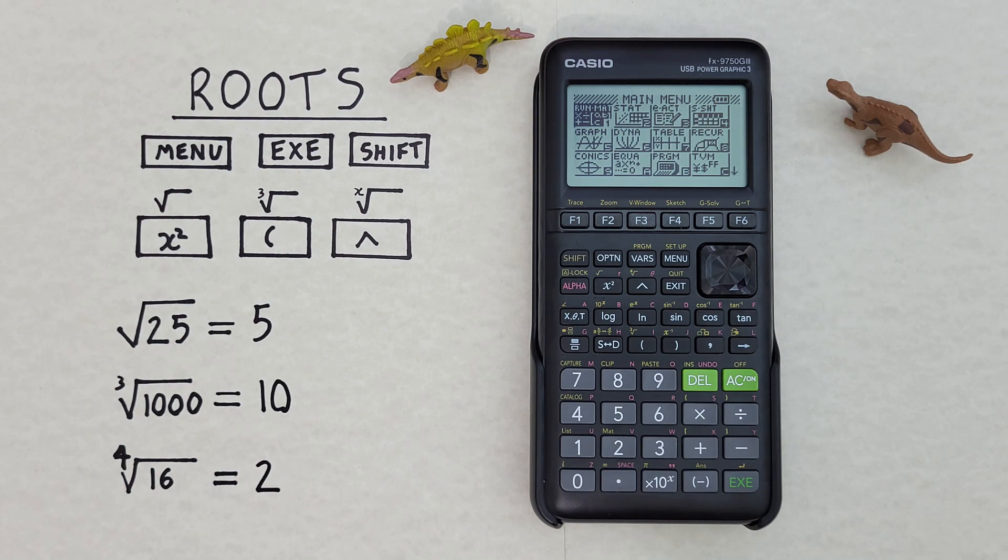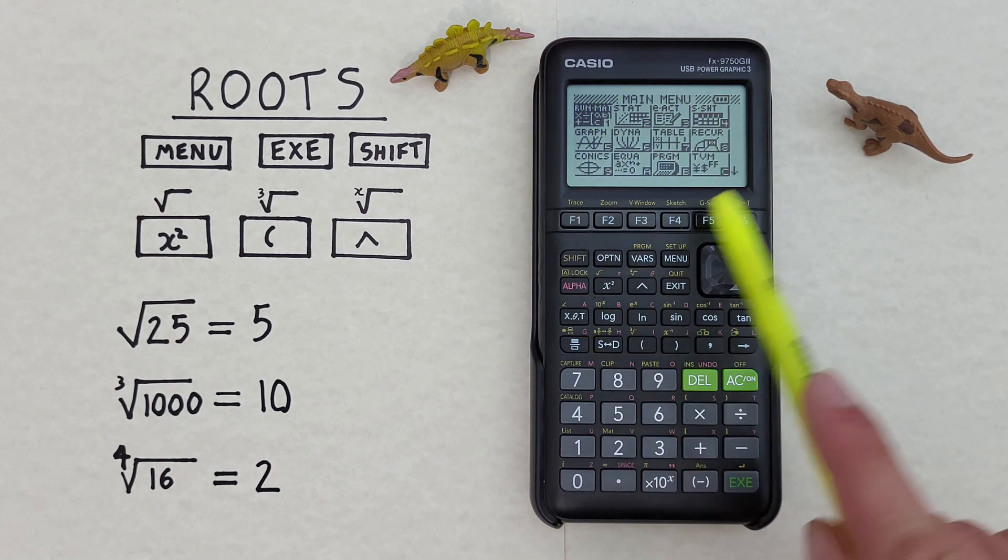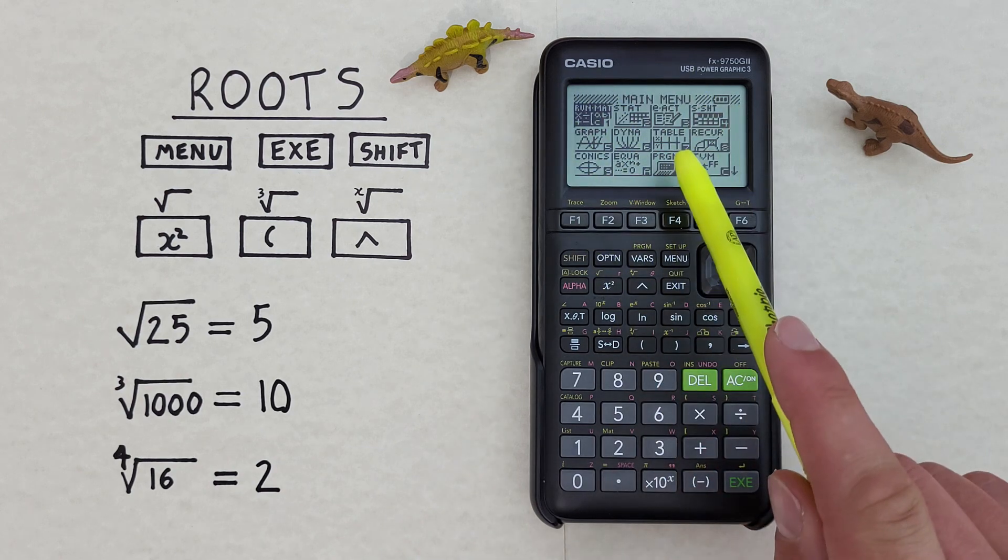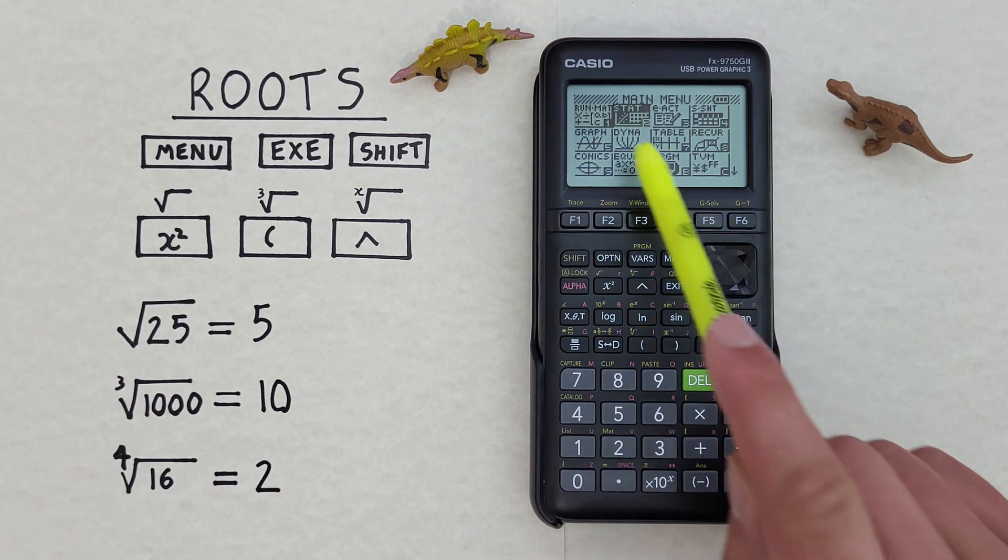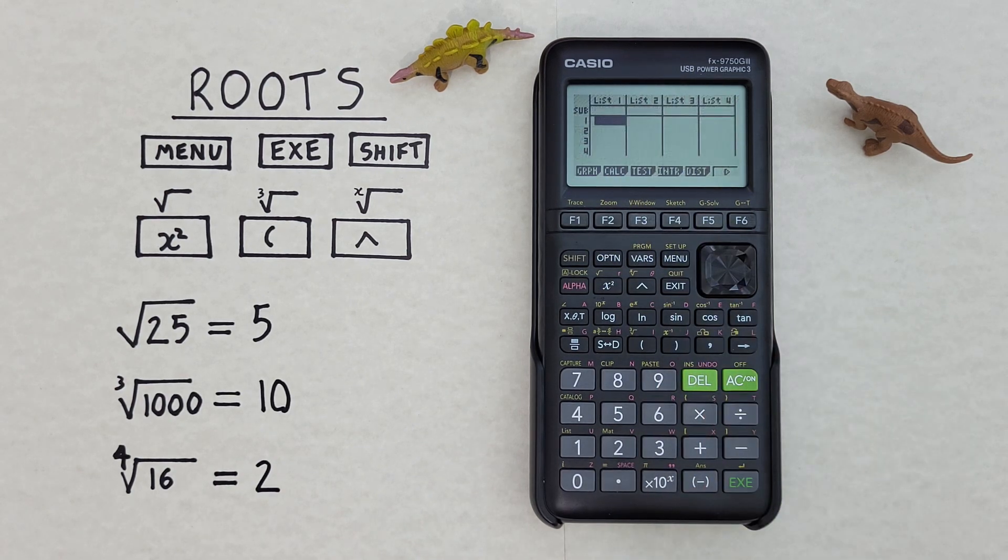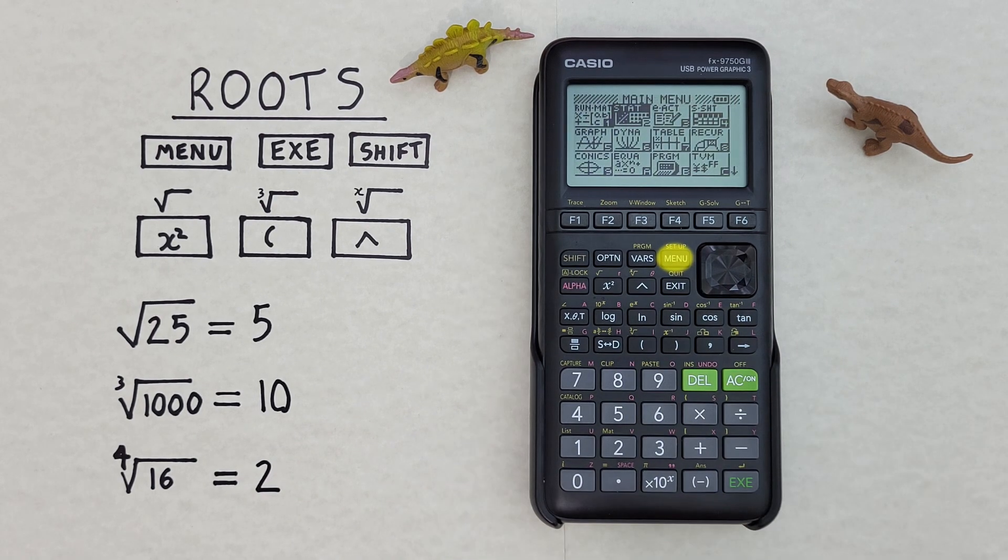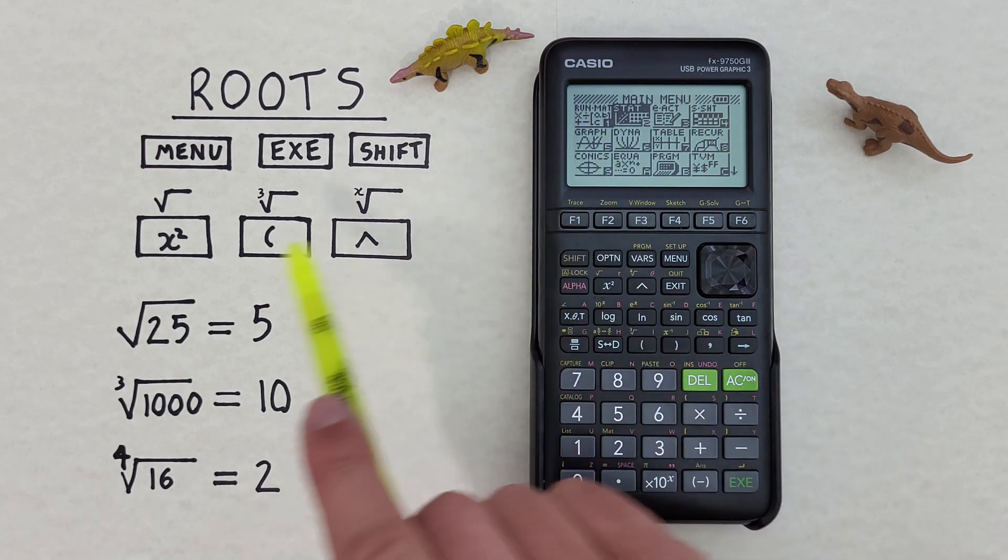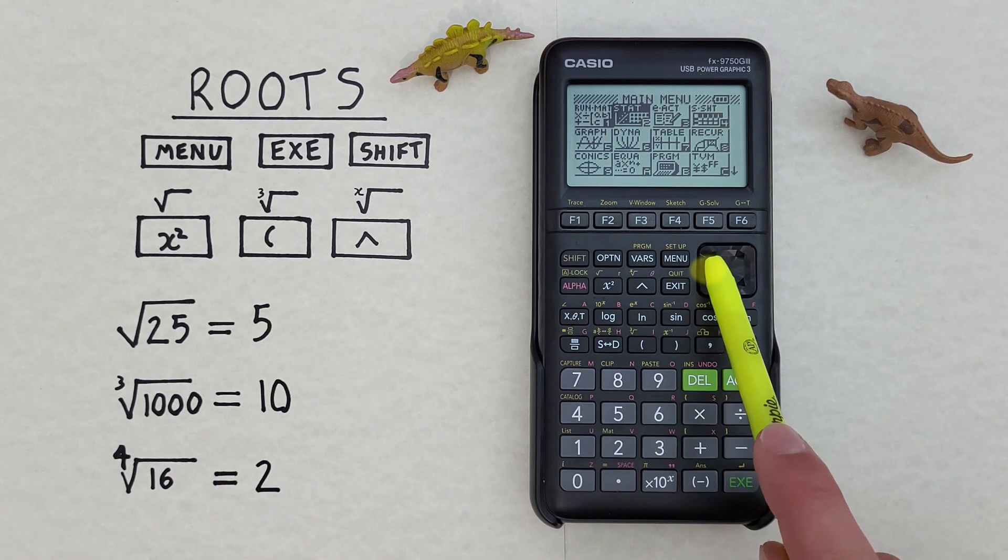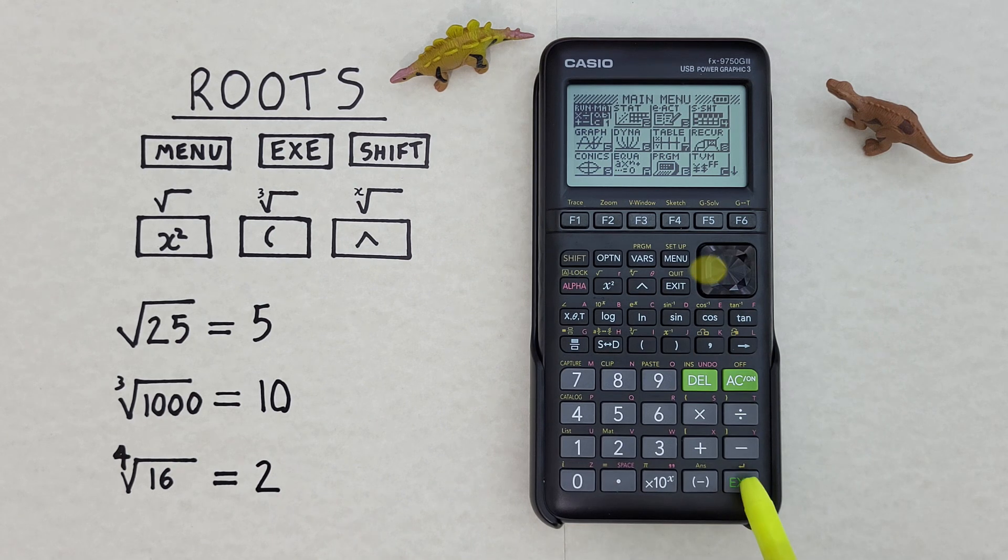Normally with this calculator when we turn it on we'll be on the main menu screen. But if we're not there, and say we're on the stat screen, we can get to the main menu by pressing the menu key here. From here we want to use the run mode to find our roots. So we scroll over to that and press the exe or execute key.